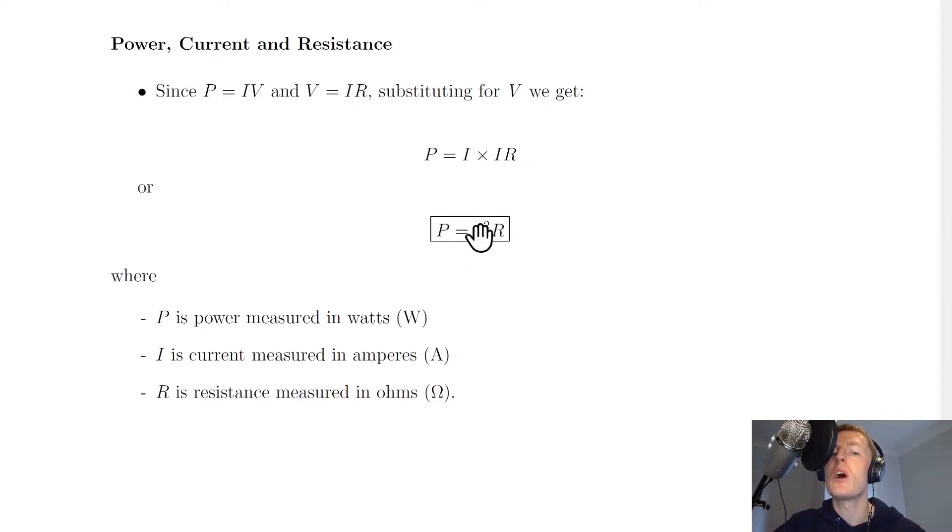Notice we've got a current squared term and it's important to remember to square this current term when you're doing problems involving this equation. P is power measured in watts, I is current in amperes, and R is resistance measured in Ohms. If you're given a current and a resistance in a question, then you can calculate the power using those values.